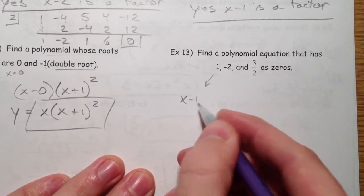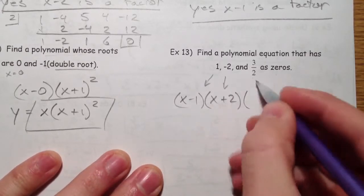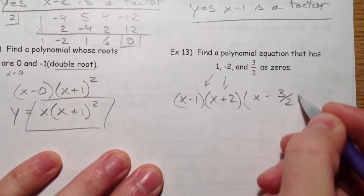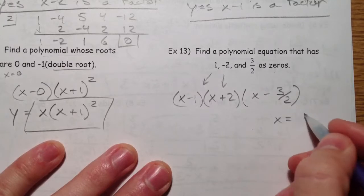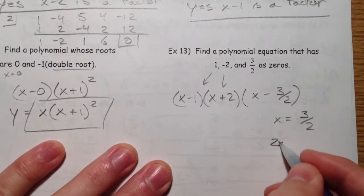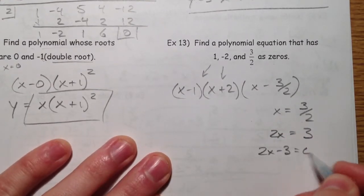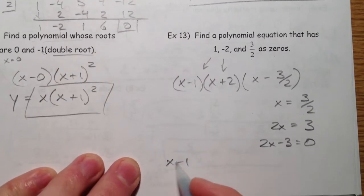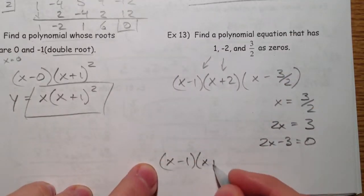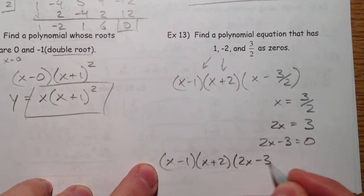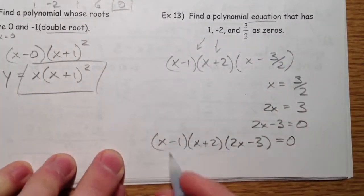So we could say x minus 1, we could say x plus 2. And we don't typically say x minus 3 halves. And so instead what we would do is x equals 3 halves, and we'd multiply both sides by 2, and we'd subtract the 3. And so ultimately it would be x minus 1, x plus 2, and 2x minus 3. And so equals 0 because we're writing the polynomial equation.